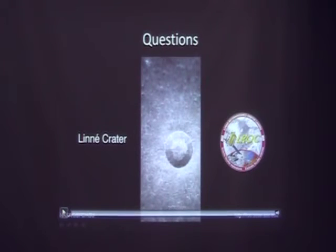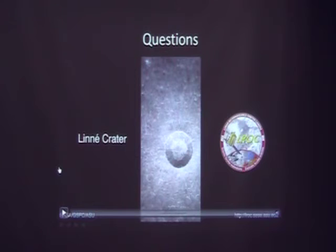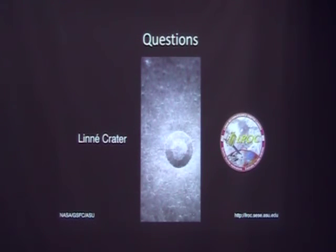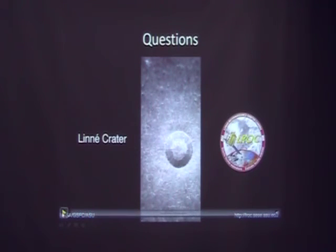One of the coolest products we can generate with these NAC DEMs is by draping the image on top to create fine perspective images and flyovers. This one is available on YouTube — it's just a flyover of a linear crater. And with that, thank you.